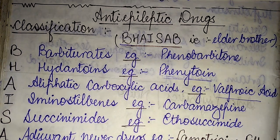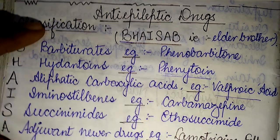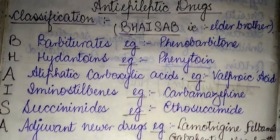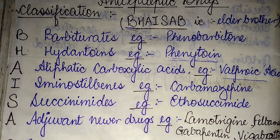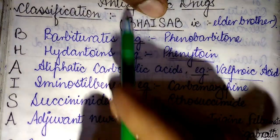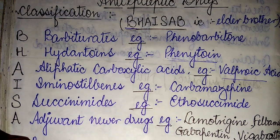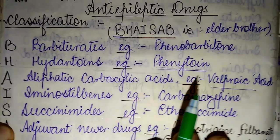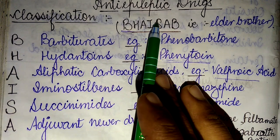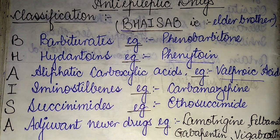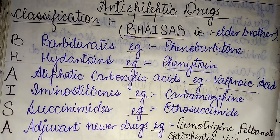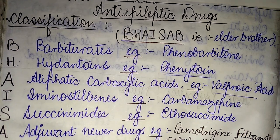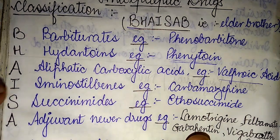The anti-epileptic drug classification can be better remembered for examination purposes using the simple mnemonic BHAISA. All the categories of chemical compounds used in the treatment of epilepsy can be well remembered and recollected during the examination. If you like my videos, please subscribe to my channel and press the bell icon for the latest updates. Thank you for watching.